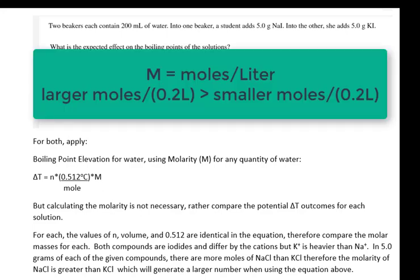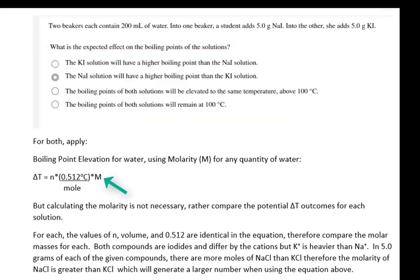The molarity of NaCl is greater than that of KCl. Because the molarity of NaCl is greater than KCl, that will generate a larger delta T. The answer to the question is that sodium iodide will have a higher boiling point than potassium iodide.